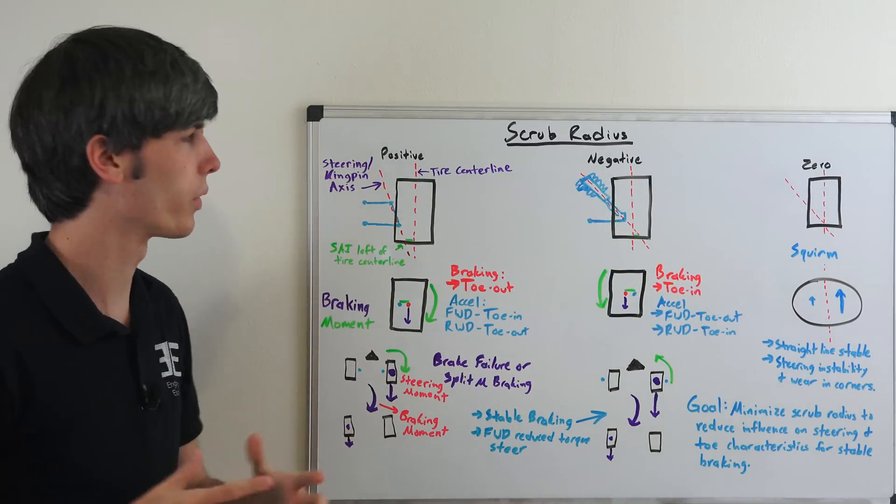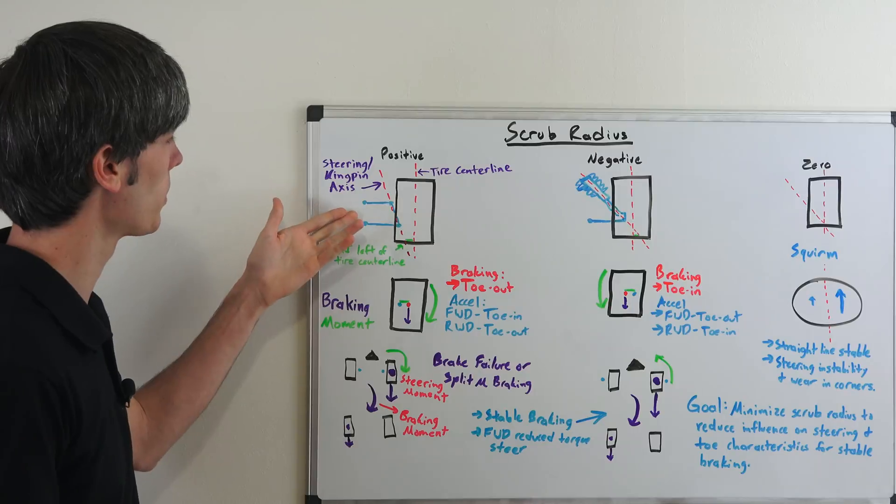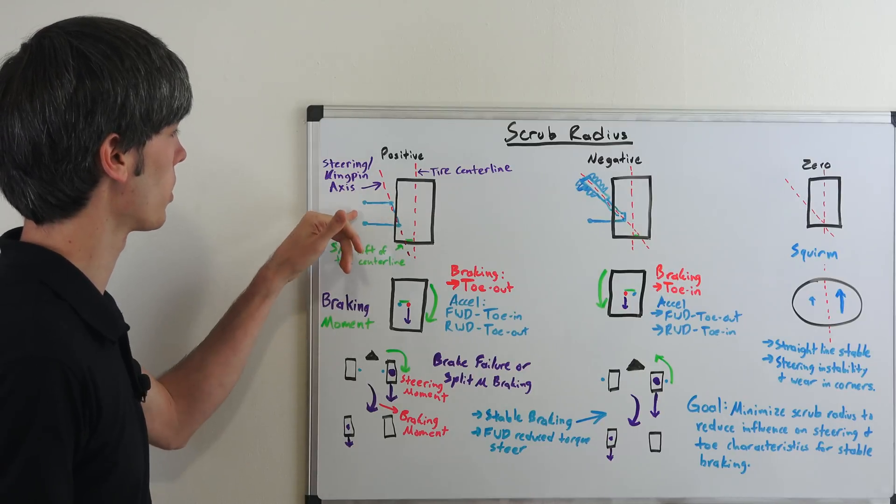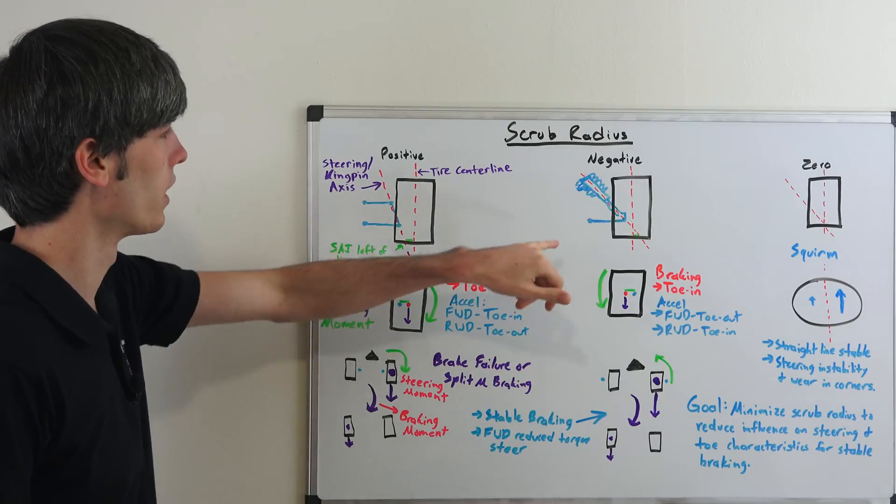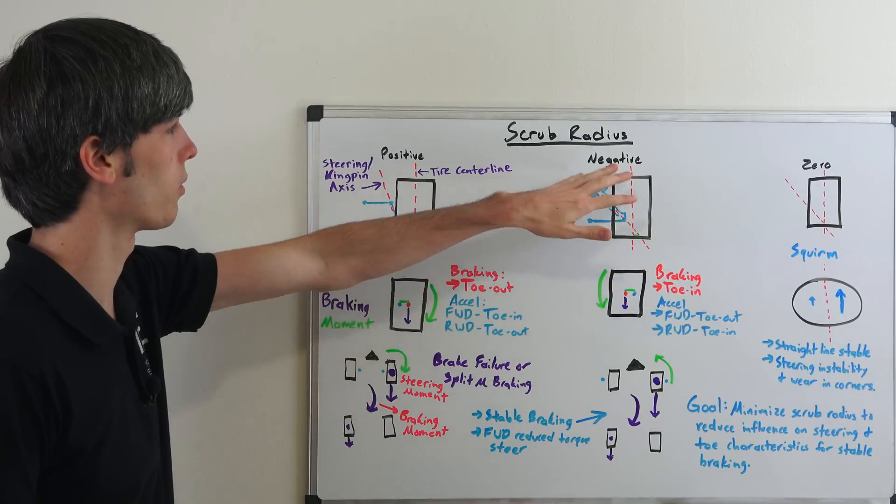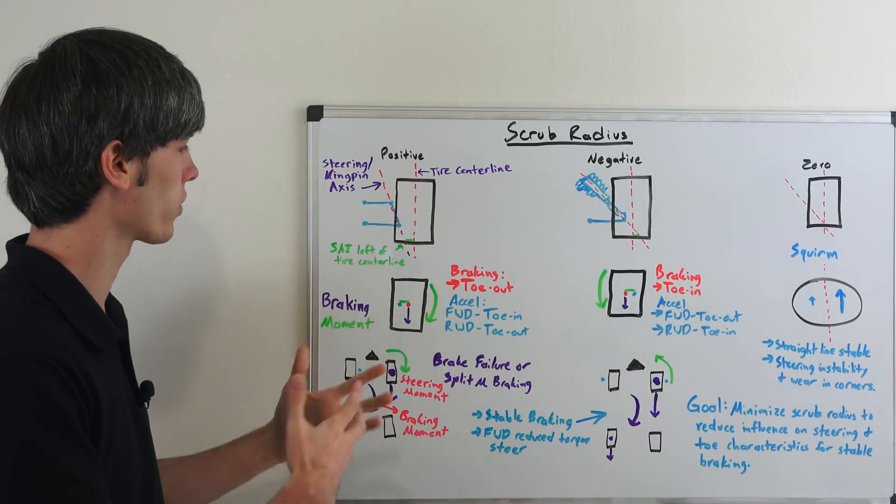So why would you want one of these? It tends to be more common with a double wishbone double A-arm suspension to have positive scrub radius. With negative, it'll tend to be with a McPherson strut, but what are some of the reasons for this?